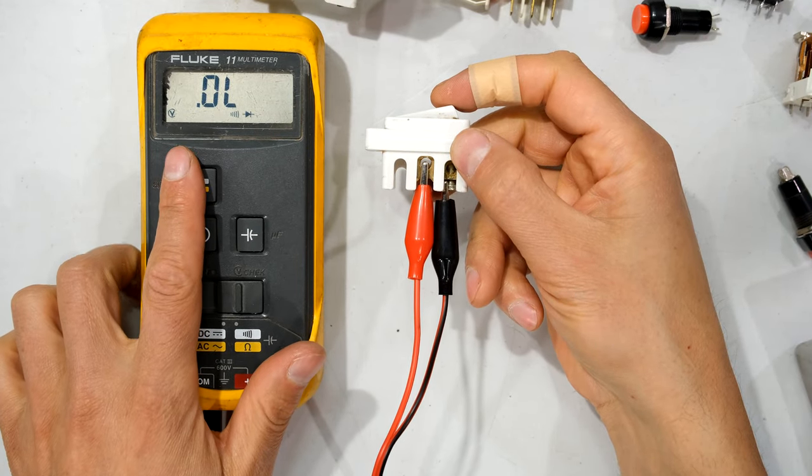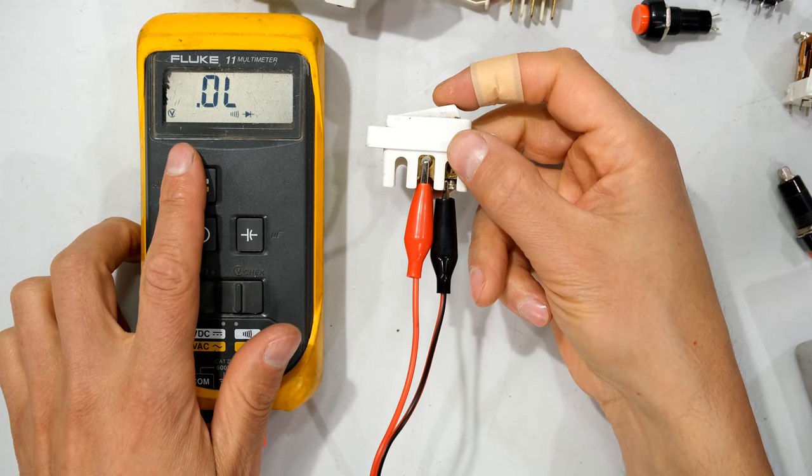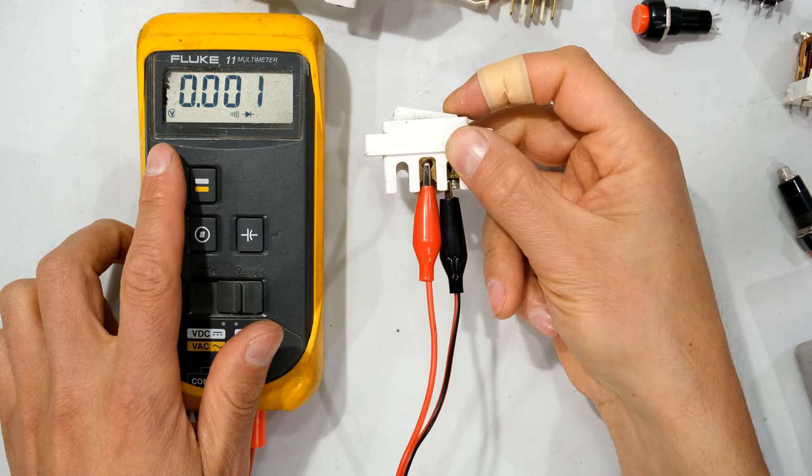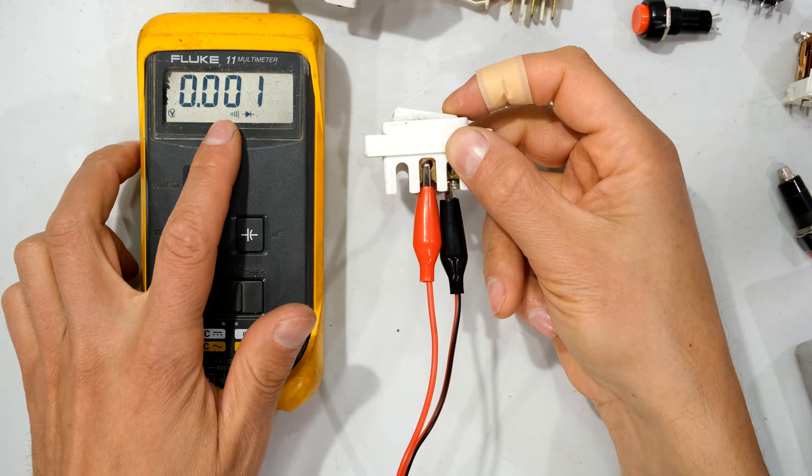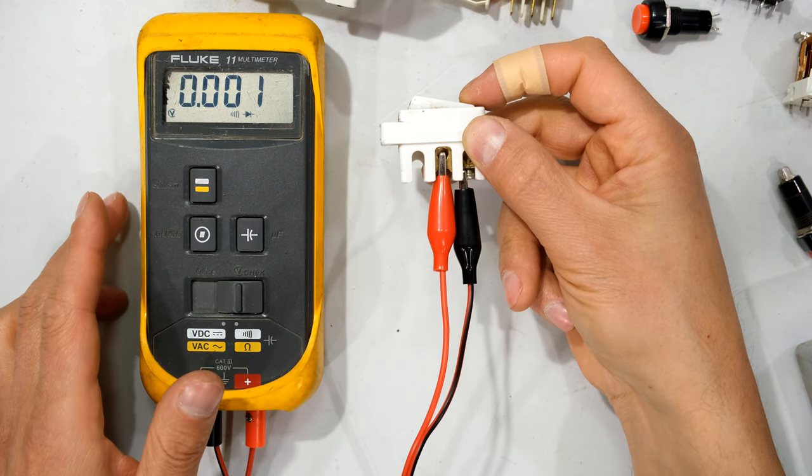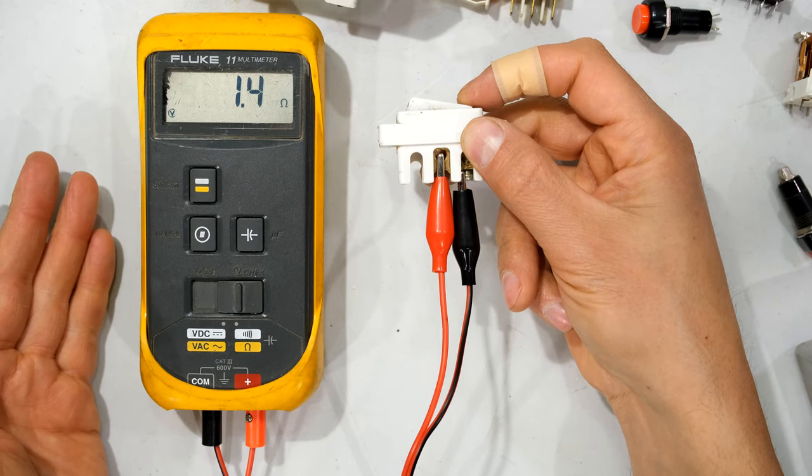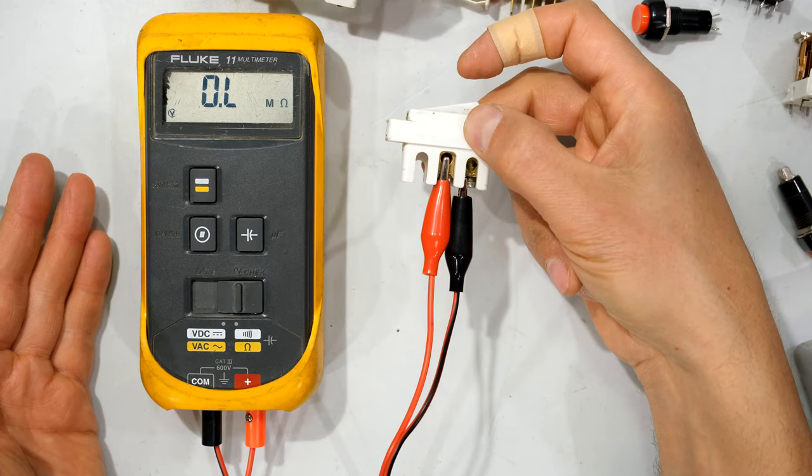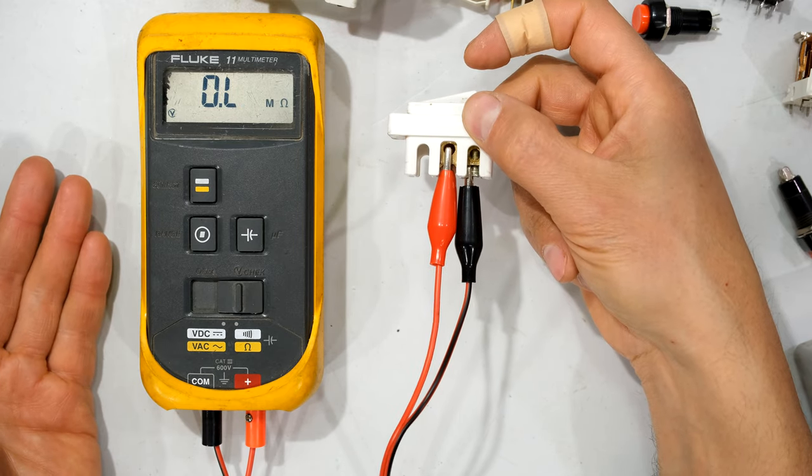So over here I've got a multimeter and it is set to measure continuity. And as you can see when I close the circuit, it is showing a short circuit and that noise is telling me a short circuit. But look at the resistance, you can see it's less than 2 ohm short circuit. But when I rock the switch in the other direction, you can see it is now an open circuit.